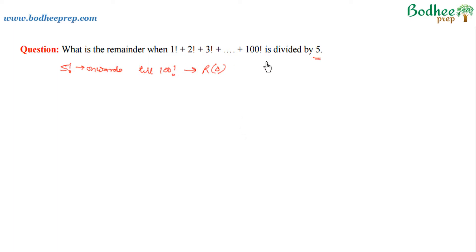So for this expression, the responsibility of getting the remainder lies with the first four terms. The first four terms are 1 factorial plus 2 factorial plus 3 factorial plus 4 factorial.